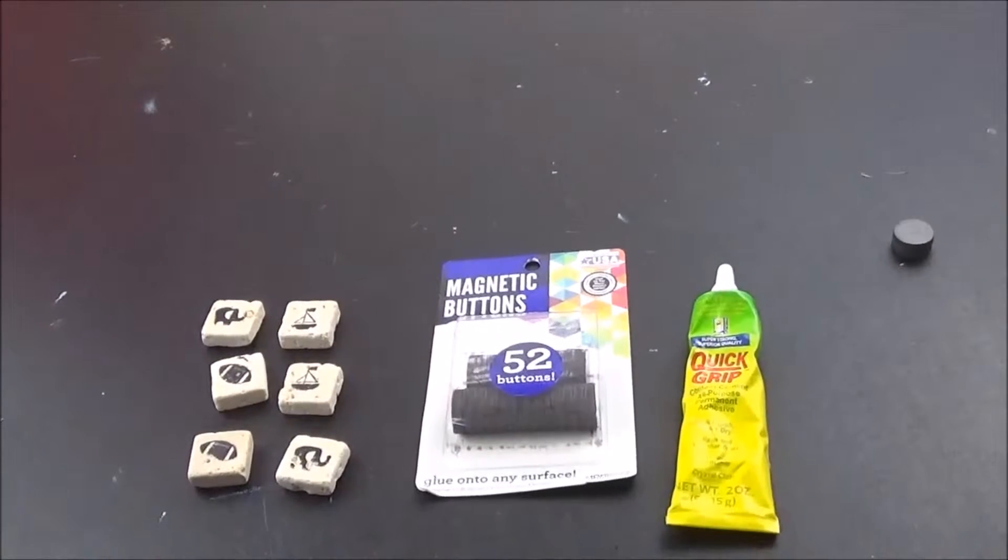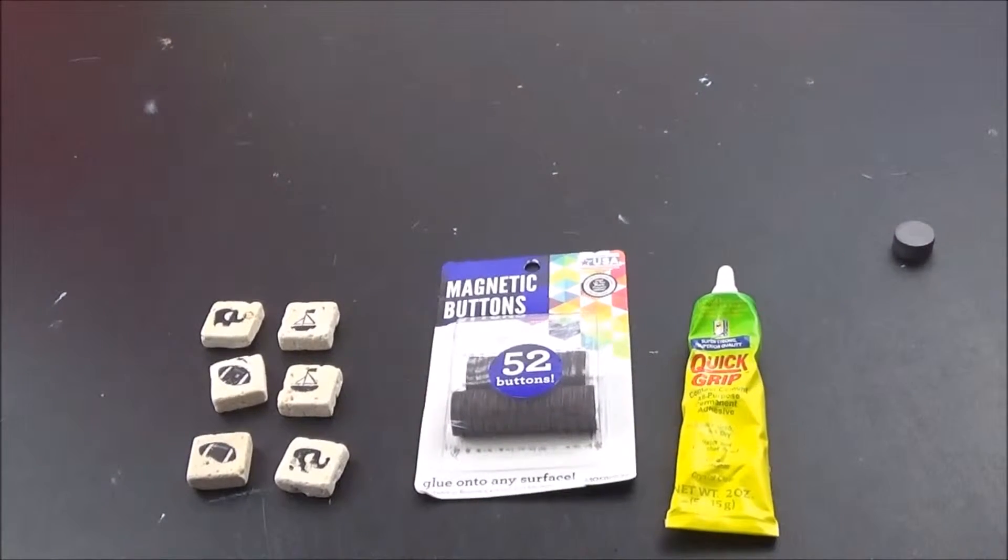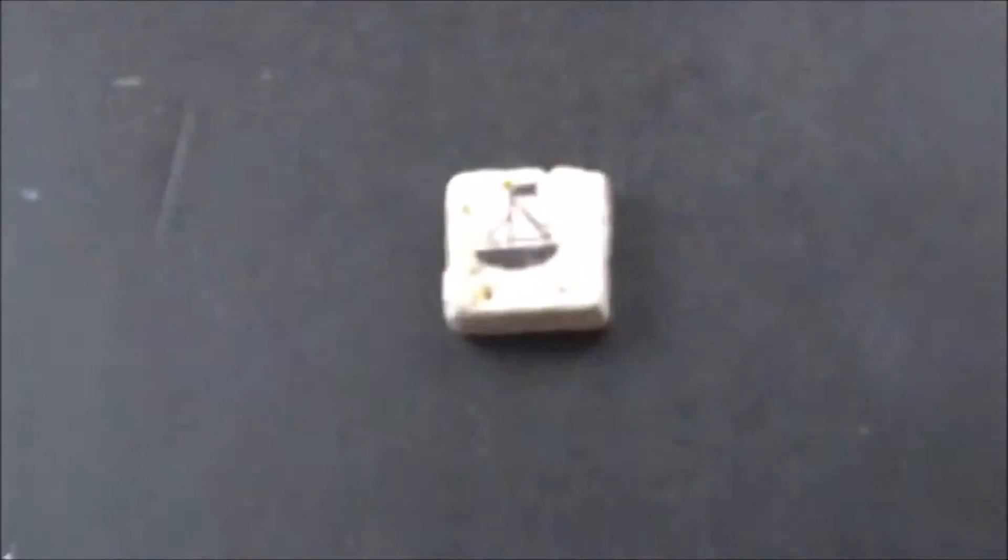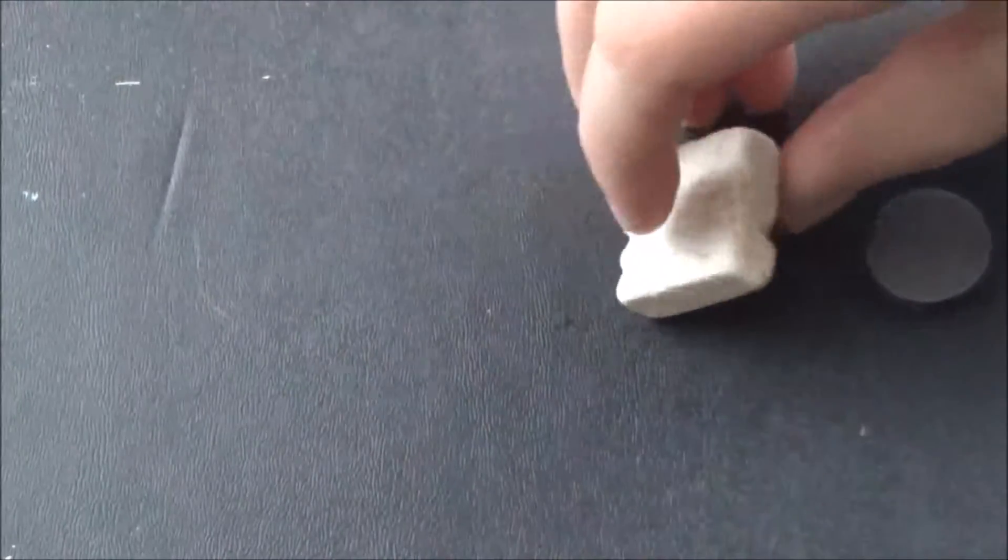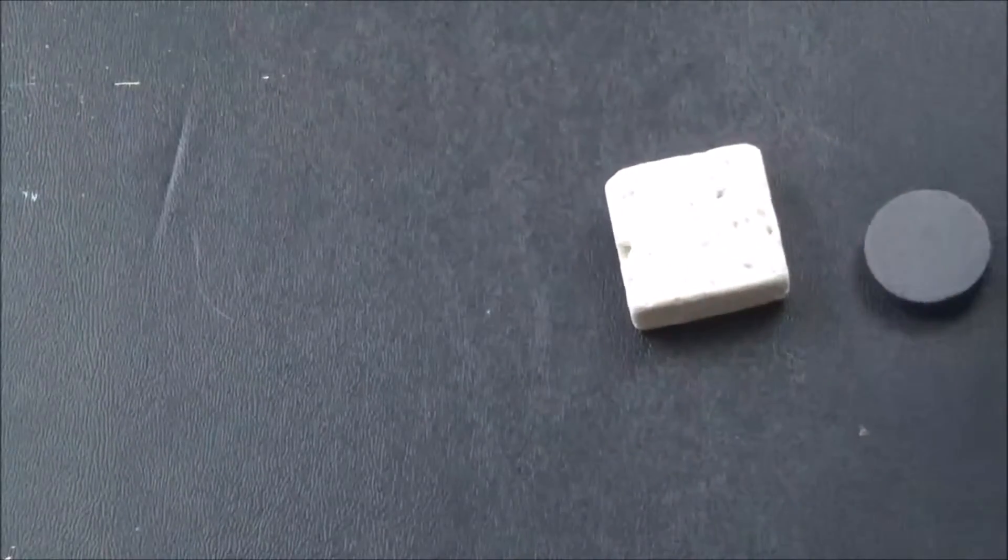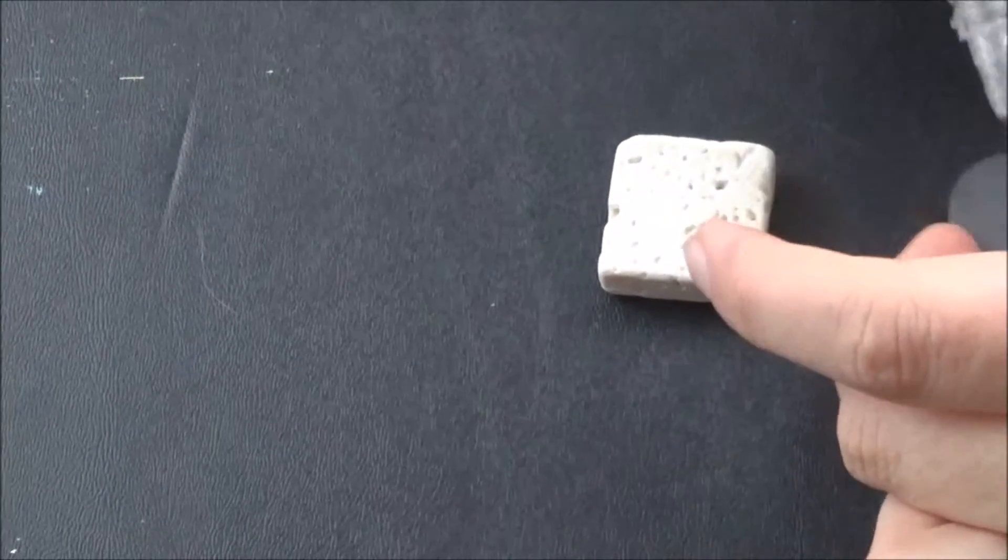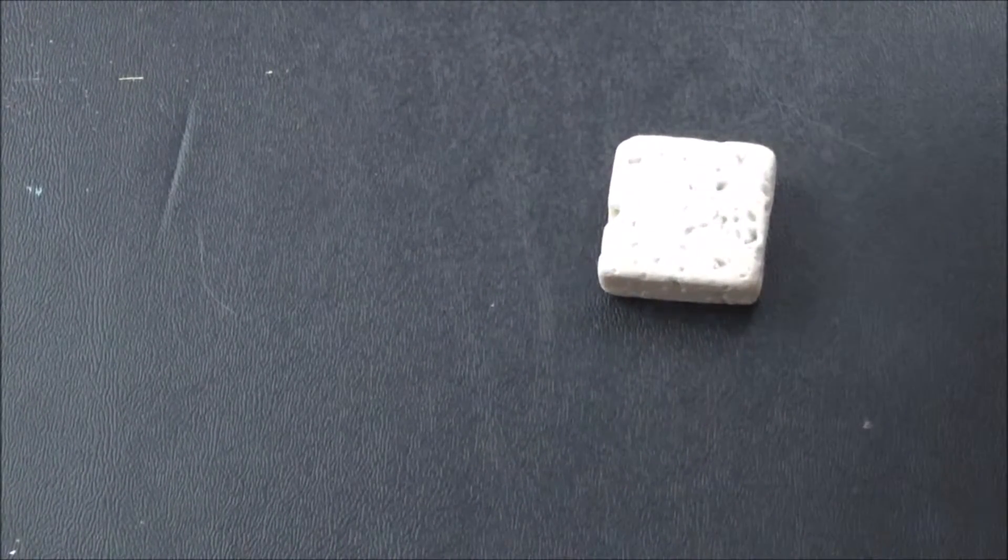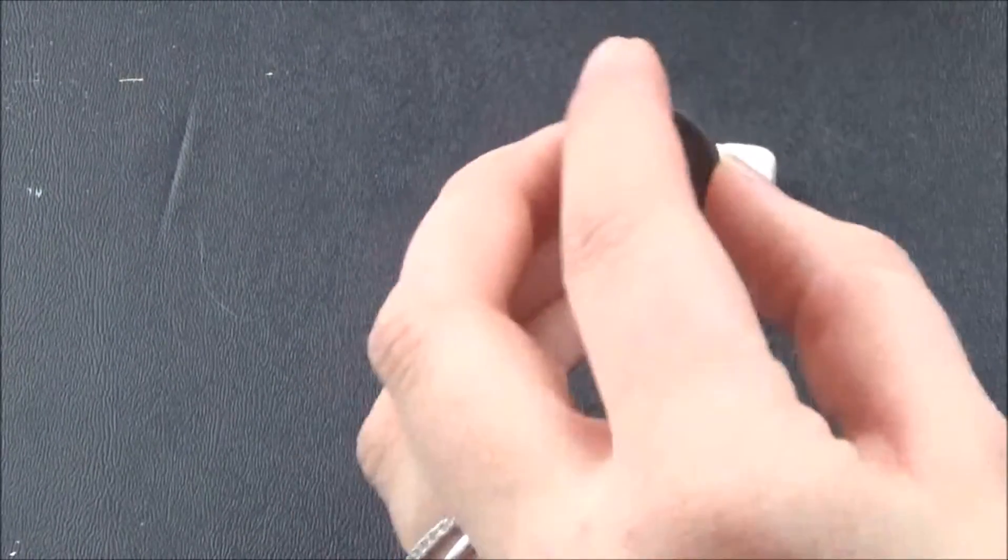Moving on, I'm going to take these magnetic buttons from Walmart and quick grip glue, also from Walmart. I'm going to flip the tile over so the pattern side is facing down, and we're going to glue on our button. I like to put a lot of glue on there so it creeps around the edges when I push down, just for extra security.